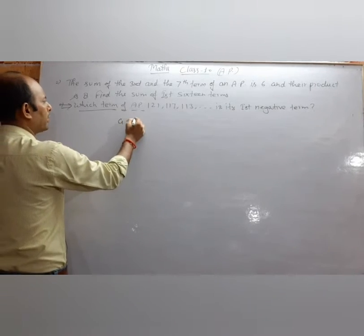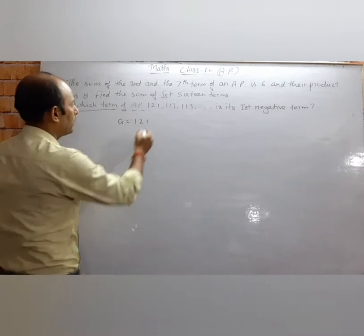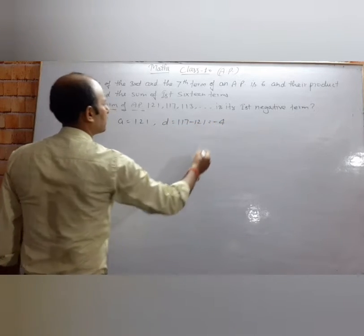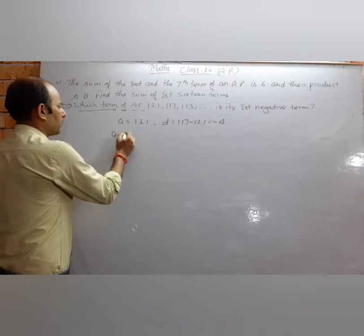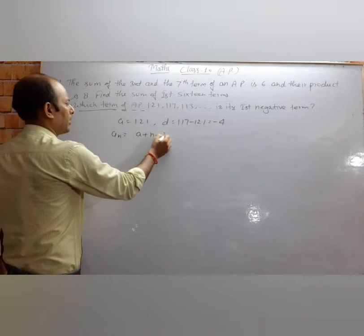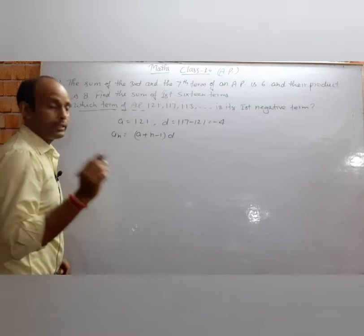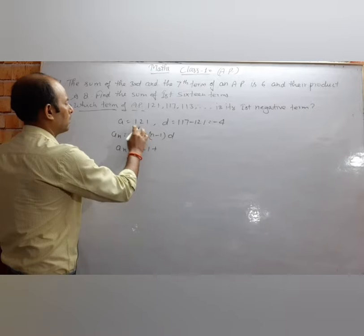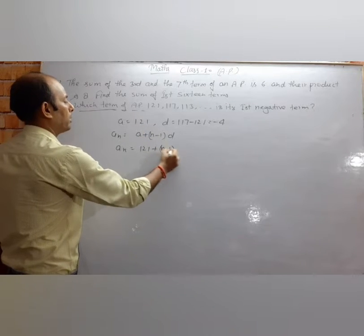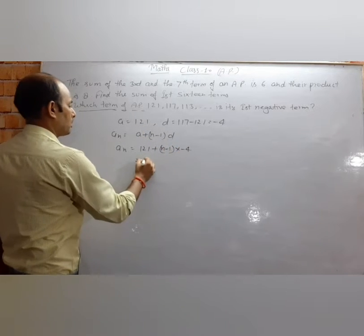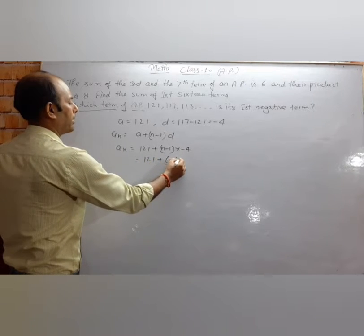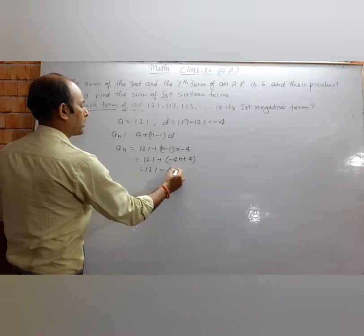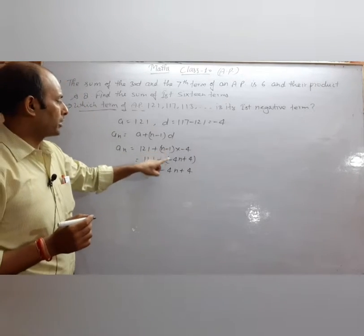The first term A is 121. What is d? 117 minus 121 gives minus 4. So to find the nth term, use a plus n minus 1 into d. The nth term becomes 121 plus n minus 1 into minus 4, which gives 121 minus 4n plus 4.